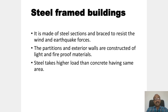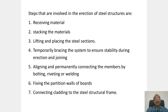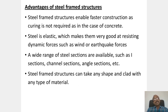Steel frame buildings are made of steel sections and braced to resist wind and earthquake forces. Partitions and exterior walls are constructed of light and fireproof materials. Steel takes higher loads than concrete of the same area. The steps involved in erection of steel structures are: receiving the materials, stacking and stocking them, lifting and placing the steel sections, temporarily bracing the system to ensure stability during erection, aligning and permanently connecting the members by bolting, riveting, or welding, fixing the partition walls of boards, then connecting the cladding to the steel structural frame.